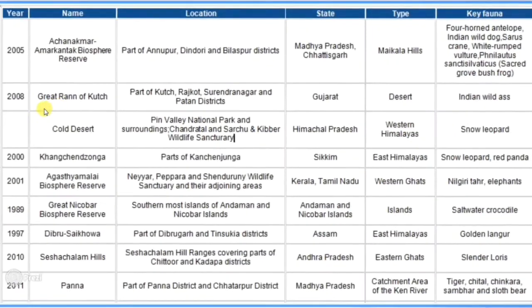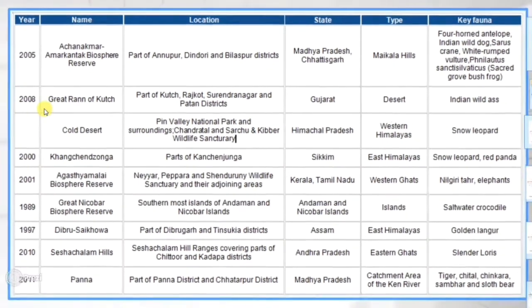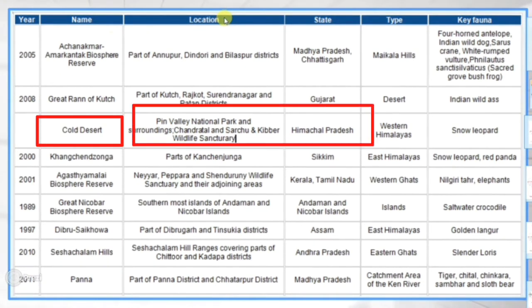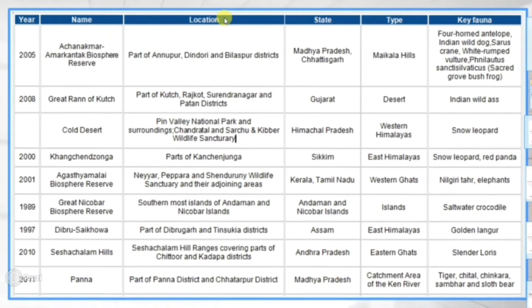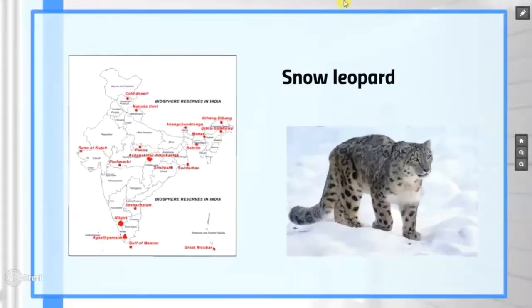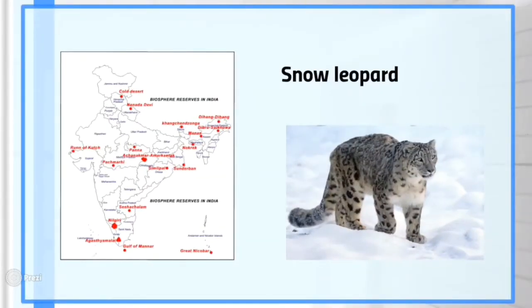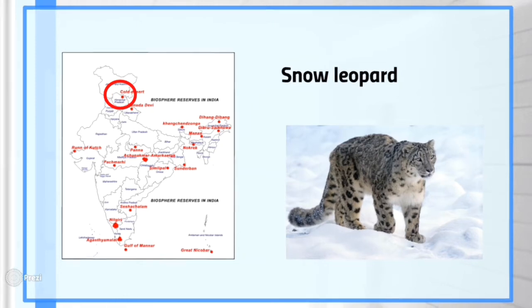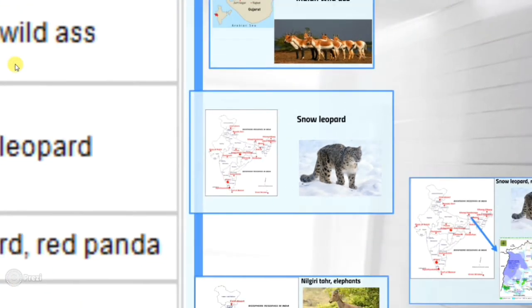Next is Cold Desert Biosphere. It is located in Himachal Pradesh — it is also a valley national park. There are quite a few biospheres where you will also find national parks; we will make a separate video for national parks and wildlife sanctuaries. The key fauna of Cold Desert is the Snow Leopard.